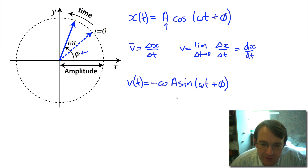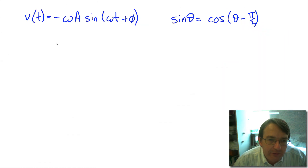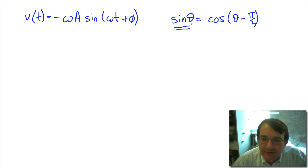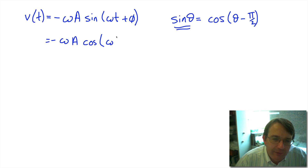We want to draw a phasor representing the velocity so we can compare it to the displacement phasor. To do that, we need to rewrite the sine as a cosine. We use the trig identity: sine of theta equals cosine of (theta minus pi over 2). So we can rewrite the velocity as minus omega a times the cosine of (omega t plus phi minus pi over 2).